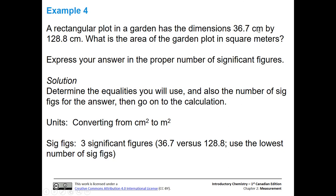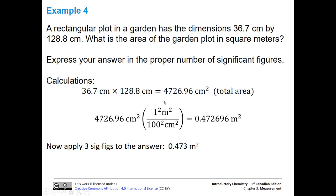In this case, we are going from centimeters squared to square meters. We have three significant figures in 36.7, and 128.8 has four, so the lower number is three — we're going to go with three sig figs. So let's figure out the total area originally in centimeters squared by multiplying our two lengths together. We get 4726.96 centimeters squared — that's the total area of this section of the garden plot.